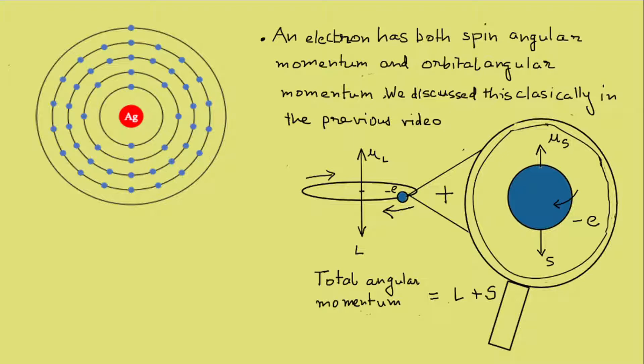The silver atom has 47 electrons. An electron has both spin angular momentum and orbital angular momentum, as we discussed in the previous video. The total angular momentum is the sum of both these components. Thus we see there is a momentum imparted due to the orbit as well as spin.